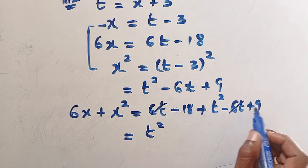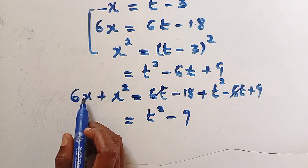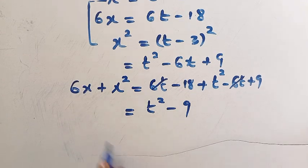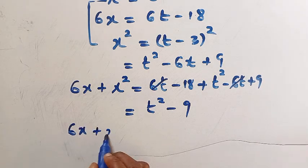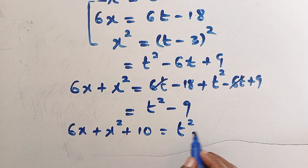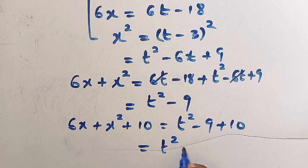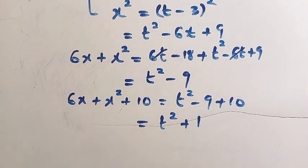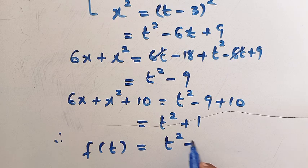We still have the constant 10 to add. So 6x plus x squared plus 10 equals t squared minus 9 plus 10, which gives t squared plus 1. This is the full right-hand side. Therefore f(x plus 3) becomes f(t) equals t squared plus 1.